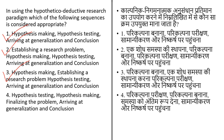Option 3: hypothesis making, establishing a research problem, hypothesis testing, arriving at a generalization and conclusion. Option 4: hypothesis testing, hypothesis making, finalizing the problem, arriving at a generalization and conclusion. There are seven stages: identifying the broad problem area, defining the problem statement, developing the hypothesis, determining the measures, data collection, data analysis, and interpretation of data. The answer is option 2.